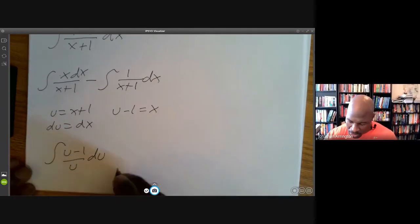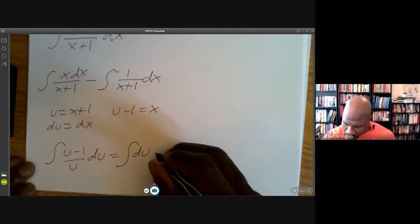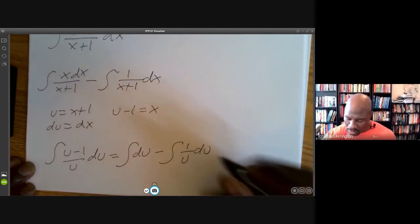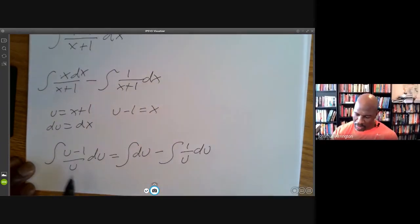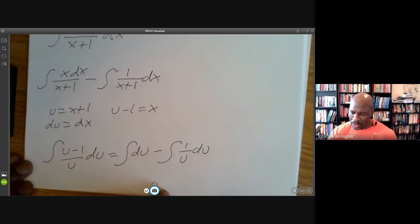I'm just dividing—u divided by u is 1, and of course 1 divided by u is 1/u. So now I can integrate all of this stuff. Let's go ahead and do the integration.